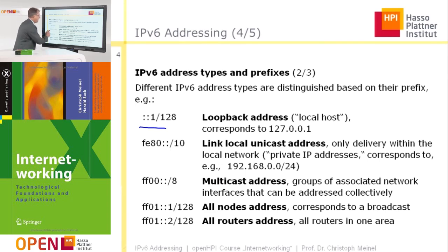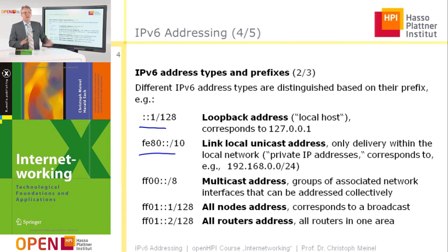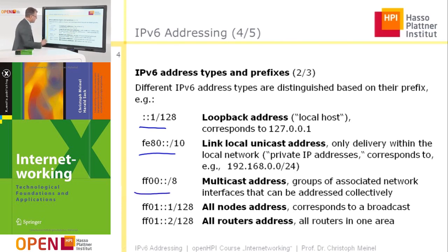The next prefix describes a link-local unicast address, used only for delivery within a local network. It corresponds in a certain sense to the private IP addresses in the IPv4 world. Another prefix is FF00, which identifies a multicast address — groups of associated network interfaces that can be addressed collectively.